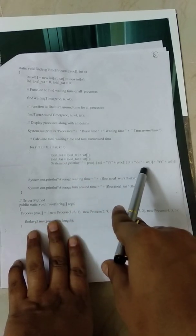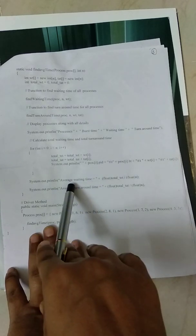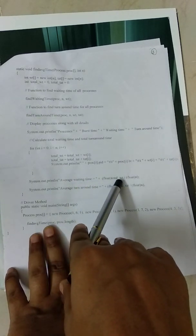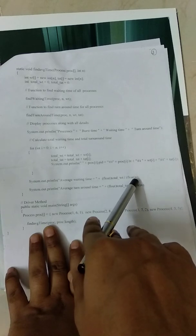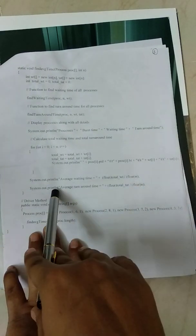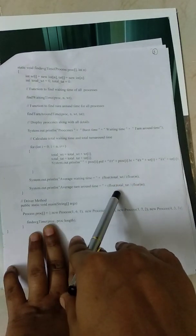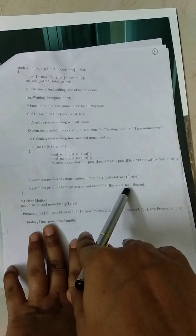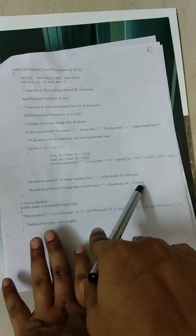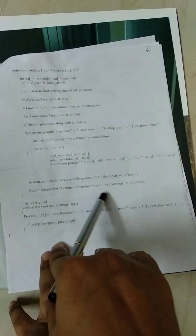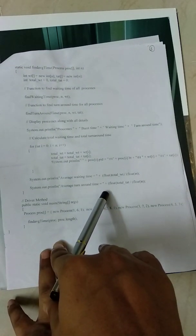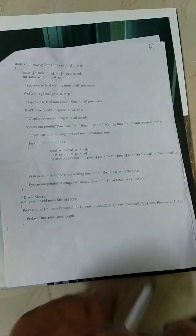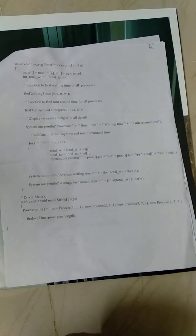Once we have the totals, average waiting time is calculated as total waiting time divided by n (number of processes). Average turnaround time is total turnaround time divided by the number of processes. This gives the average waiting time and average turnaround time. That completes the SRTF algorithm implementation.